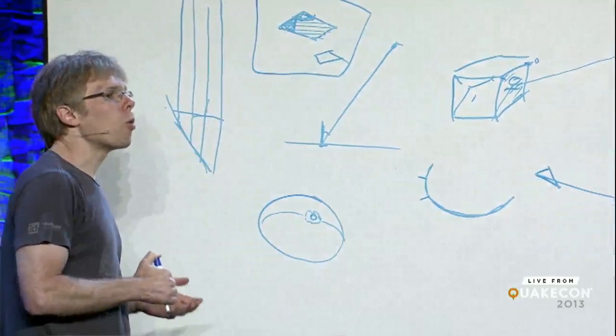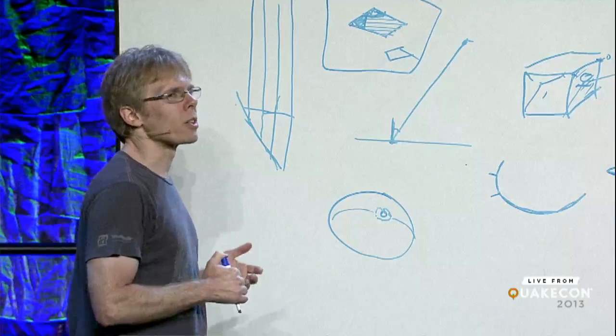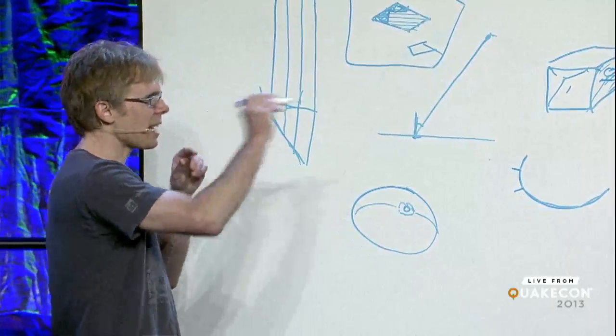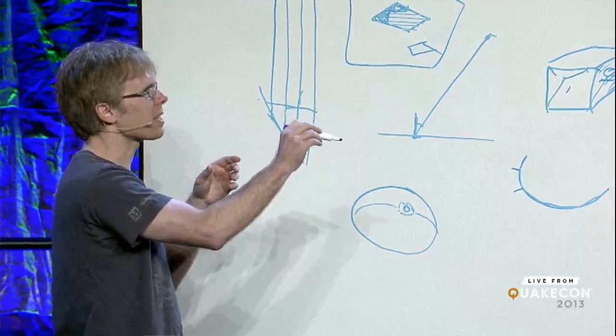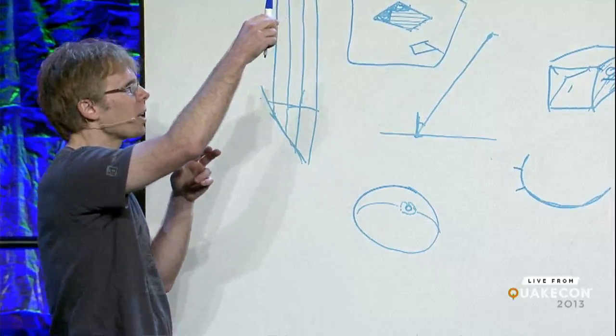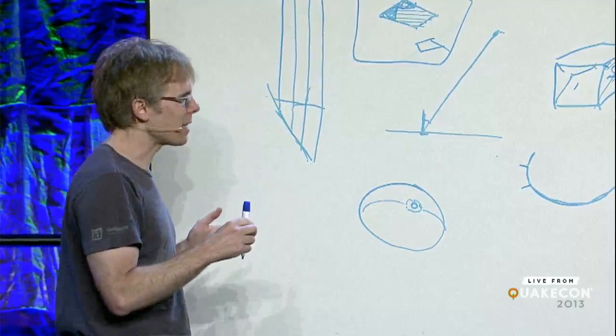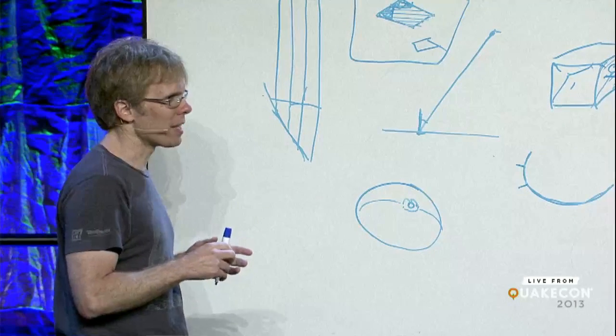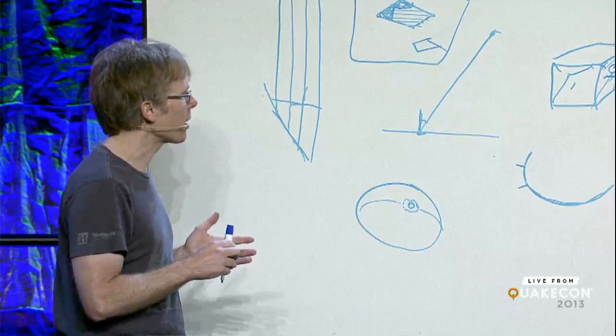So ray tracing always had this much clearer abstraction of what you're doing. It's easy to tell that you're sending out a little ray, you hit something, you determine whether you hit all the other lights or if you bounce or refract into something else. So it's always been easy and clear. It's just had this thousand times slower problem to deal with.